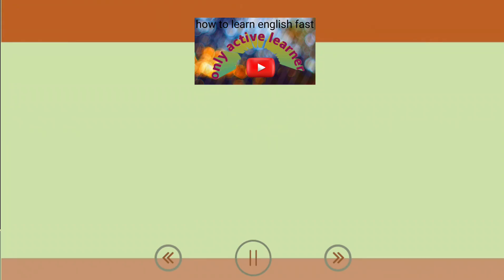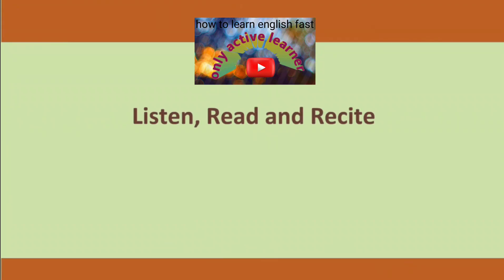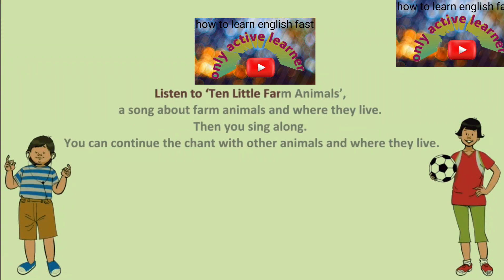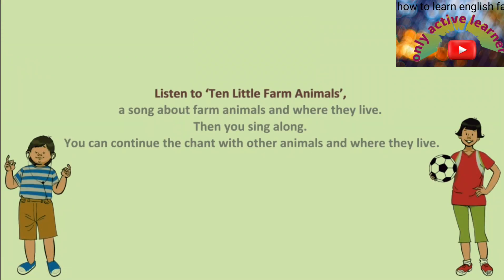Unit 5. Listen, read and recite. Listen to Ten Little Farm Animals, a song about farm animals and where they live. Then you sing along. You can continue the song with other animals and where they live.